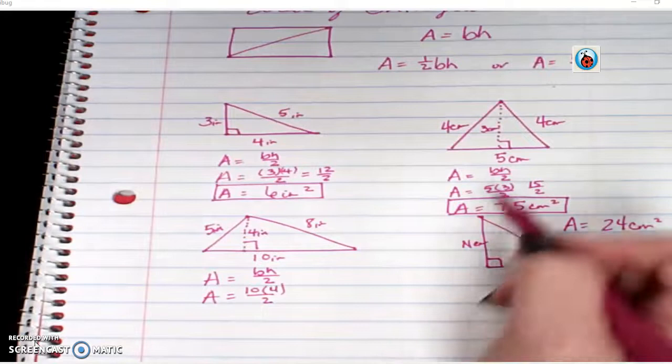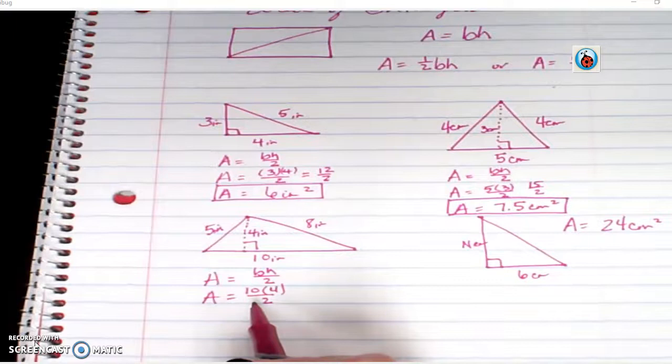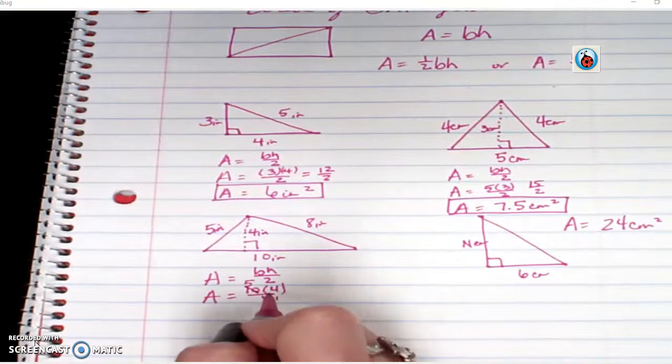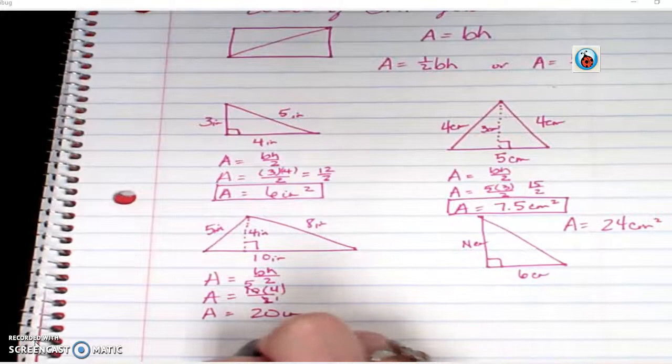Now, here I took half of my total. But if I wanted to keep my numbers small, I can take half of one number. So I could say two goes into two once, two goes into ten five times. So my area is twenty. It's just another way to solve the same thing.